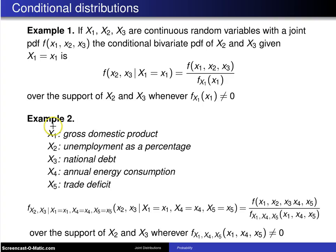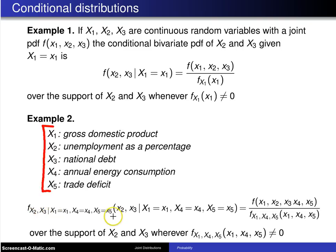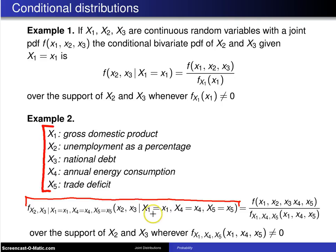In the second example, we have the same five variables as before: GDP, unemployment, national debt, annual energy consumption, and trade deficit. Those five variables are all continuous, and we might want the conditional probability density function of x2 and x3 given the values of x1, x4, and x5. All of this notation is to define that particular conditional distribution, with the joint distribution in the numerator.